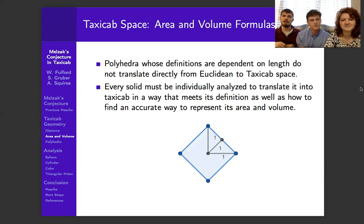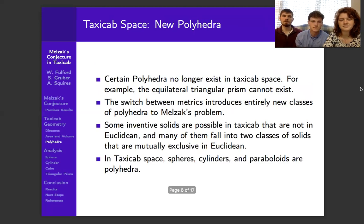And because of this difference in lengths and spaces, different solids don't translate directly from Euclidean into taxicab. Because of this, we have to analyze each polyhedra individually to find an accurate way to represent it in taxicab based on its area and volume.